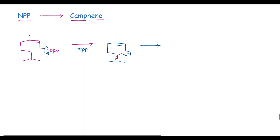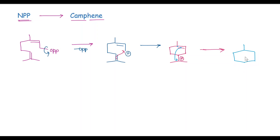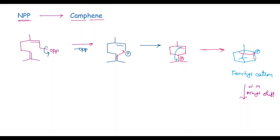In the next step, this Pi bond attacks on this carbocation, and we get a six-membered ring with this tertiary carbocation and this double bond. In the next step, this Pi bond attacks via this carbon atom, and we get a positive charge. This moiety is called as Penten-cation. In the next step, a Wagner-Meerwein 1,2-shift takes place on this carbocation, and there is a formation of a new cation.